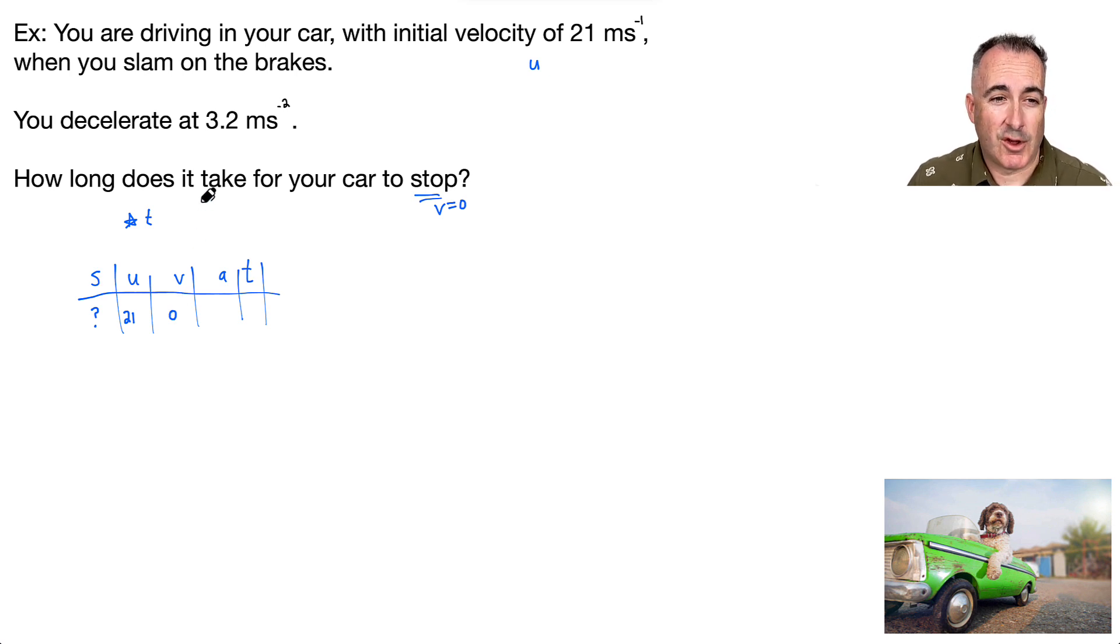Now the acceleration, what do I put in here? Do I just put in 3.2? Be very careful. If I put in 3.2, that means you accelerate, that means you pressed on the gas pedal. We don't want that. So how do I deal with decelerating? I'm accelerating to the left. So I'm going to put a negative 3.2. This is the important part. And T is what I want.